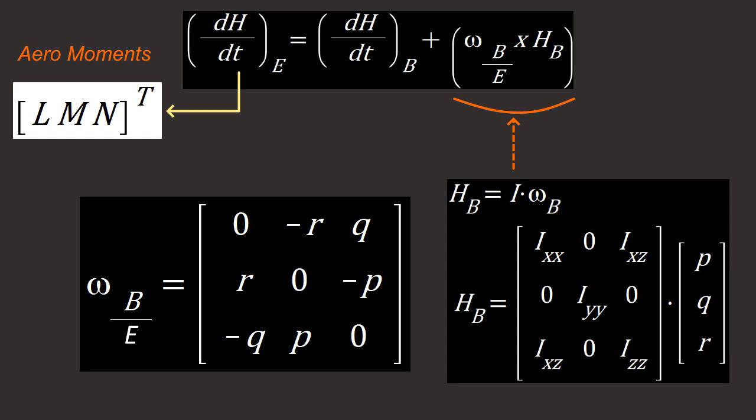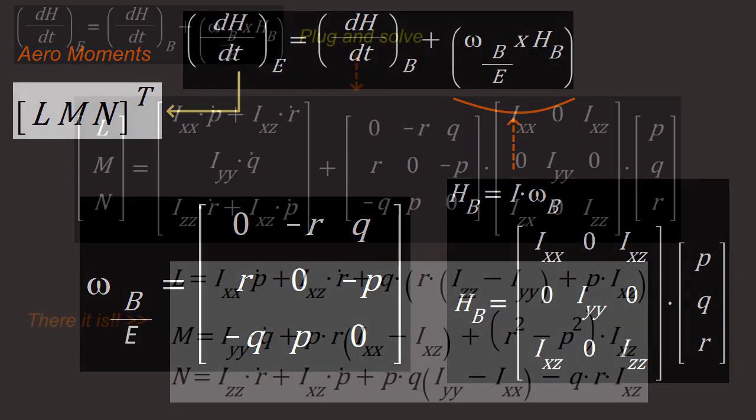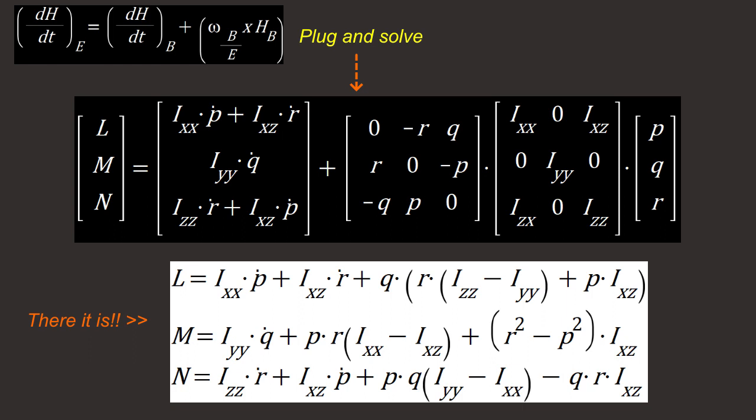Solving the rightmost side, we have Omega B over E cross HB. So let's first do Omega B over E—that's once again the skew symmetric matrix. H once again is I times Omega, and this time the I matrix is already an n by n matrix, so you just multiply that by P, Q, and R. So let's plug everything back. On the left-hand side, we have DH over DT—that's the torque, and torque equals LMN. DH over DT in the body frame once again is I times D Omega over DT. Then we have Omega B over E cross HB, so you just simply solve for LMN, and LMN are the moments of the aircraft in the earth frame. This is what you want to get.